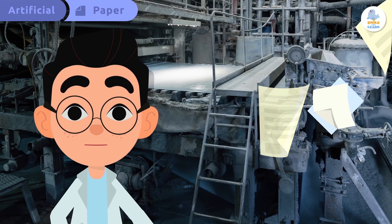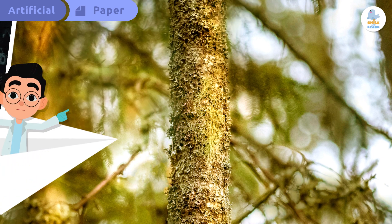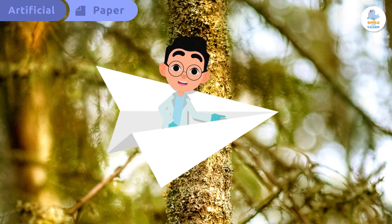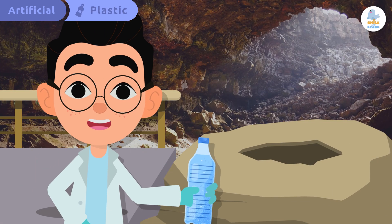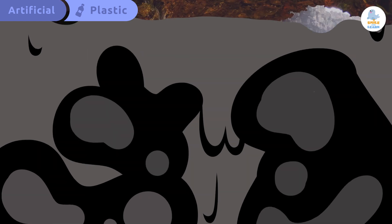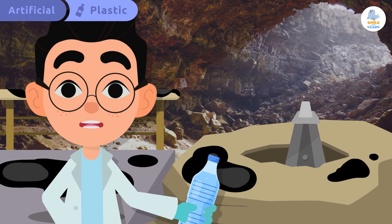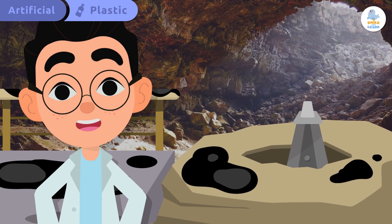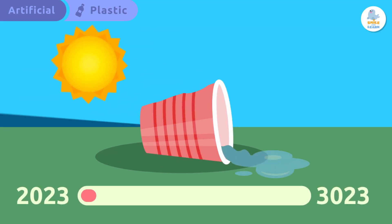Do you know what paper is made of? Exactly, it's made from the wood of trees. And plastic? Plastic is made from petroleum, which we get from deep inside the earth.